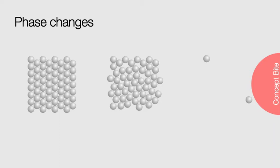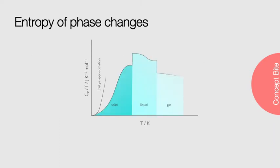Now, there are two ways we can proceed with our understanding from this point. We can consider the area under our plot of Cp over T against T, or we can relate entropy to the energy provided as heat reversibly, divided by the temperature of that phase change. If we look at the first case, and how the heat capacity divided by temperature changes with temperature, there are clear changes in the heat capacity of a material during the phase change, since the change of phase allows clear differences of the energy levels and population of those levels within a system. The absolute entropy of the system is the area underneath this plot, or mathematically, the integral.